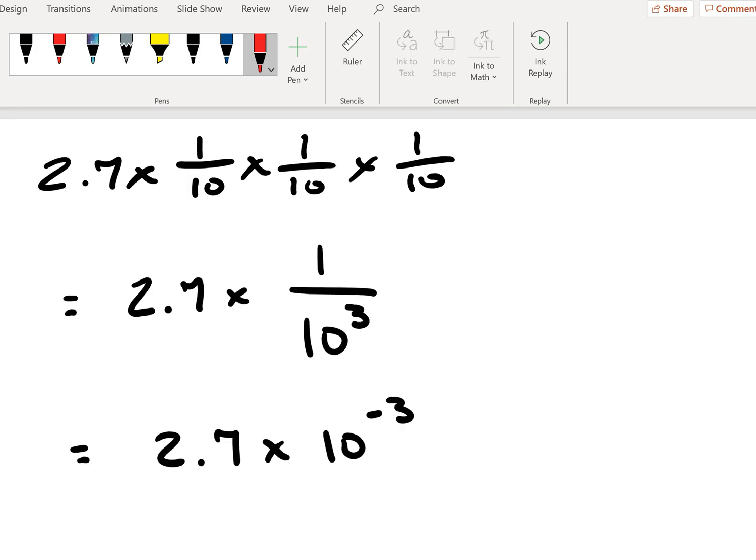From here, we will build our scientific notation by recombining according to our exponent rules. We see that 1 over 10 times 1 over 10 times 1 over 10 is 1 over 10 cubed. When we have a power in the denominator, we can bring it up with the opposite sign, giving us the 10 to the negative third power.